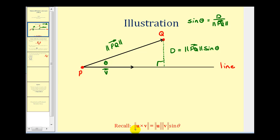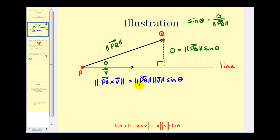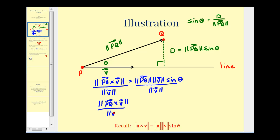Going back to the theorem that states the magnitude of U crossed with V equals the magnitude of U times the magnitude of V times sine theta, we let vector U be vector PQ and vector V be the directional vector of the line. Performing those substitutions, the magnitude of vector PQ crossed with vector V equals the magnitude of vector PQ times the magnitude of vector V times sine theta. Dividing both sides by the magnitude of vector V, we get the magnitude of vector PQ cross vector V divided by the magnitude of vector V, which equals the magnitude of vector PQ times sine theta.